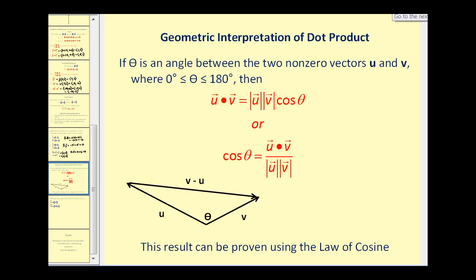Let's take a look at the geometric interpretation of the dot product. If theta is the angle between two nonzero vectors U and V, where theta is in the closed interval from 0 to 180 degrees, then U · V equals the magnitude of U times the magnitude of V times cosine theta. Solving for cosine theta gives us the equation in that form. We can derive this formula using the law of cosines, but we won't go into that here.